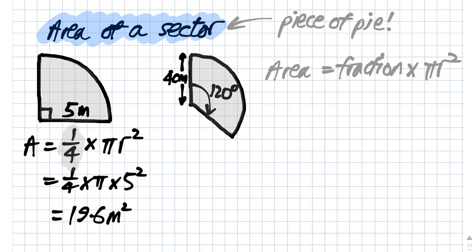So calculating the area of this first one, we get area is a quarter of the full circle. The full circle's got radius 5, so it's a quarter pi times 5 squared, which ends up 19.6 correct to one decimal place.